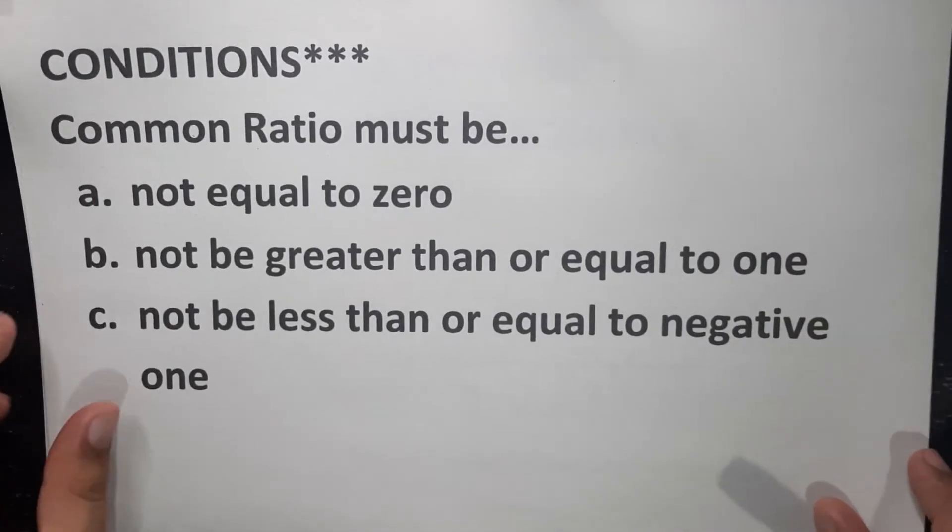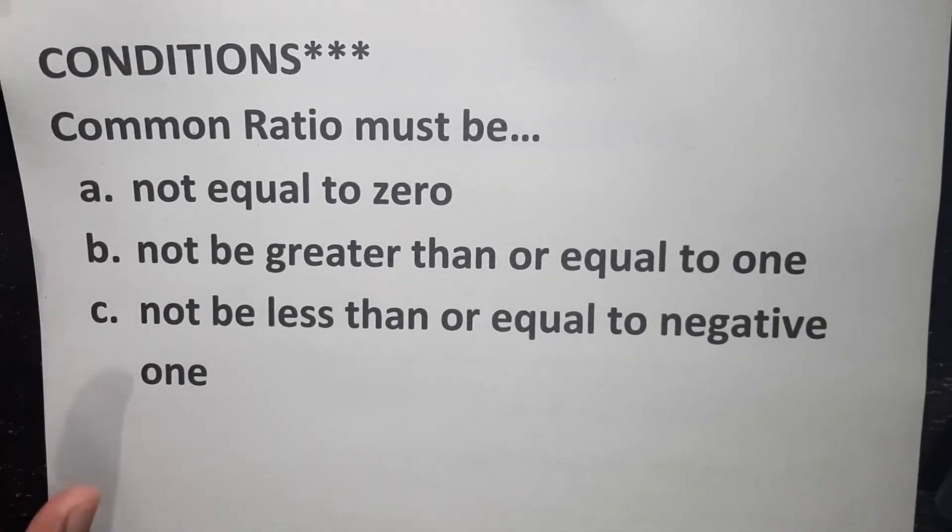Conditions for common ratio. Common ratio must not be equal to 0. Letter B, the common ratio must not be greater than or equal to 1. So all common ratio which is 1, 2, 3, and so on, any value greater than or equal to 1 is not allowed for the sum of infinity. And I will explain later on why it isn't allowed.